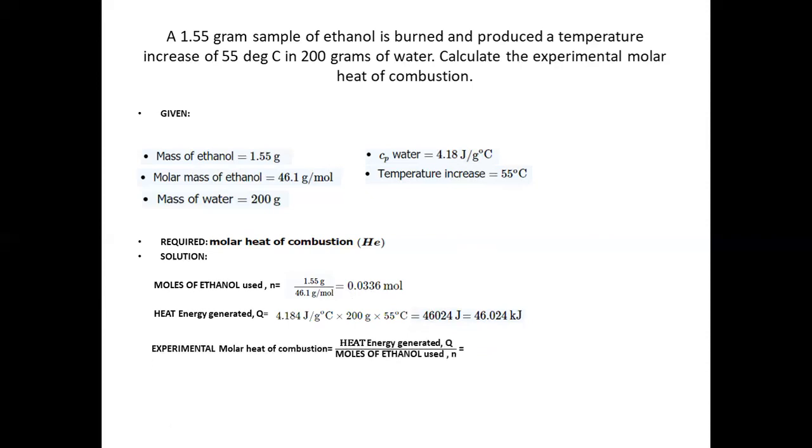For the experimental molar heat of combustion, we divide Q by N, or the heat energy generated over moles of the compound used. It is ethanol. Now Q over N: 46.024 kilojoules per 0.0336 mole. This gives us 1,370 kilojoules per mole for this problem.